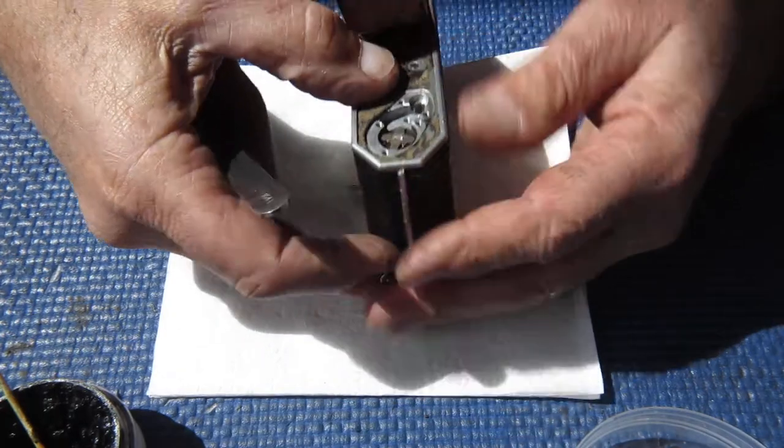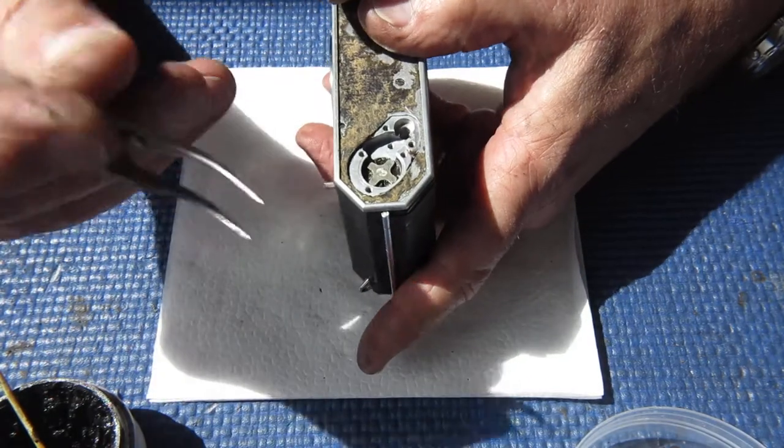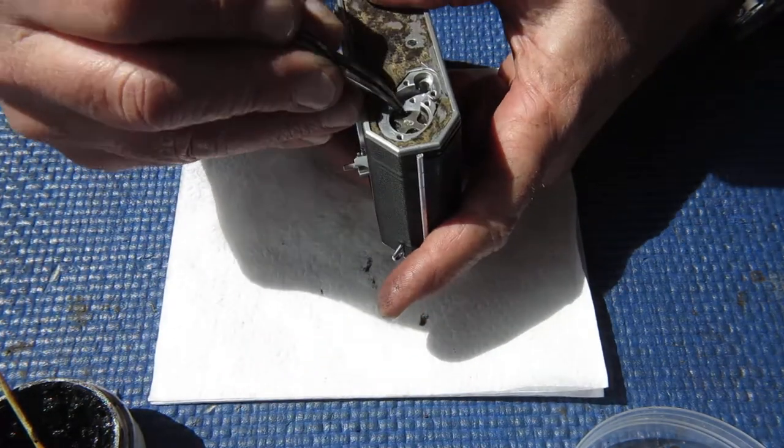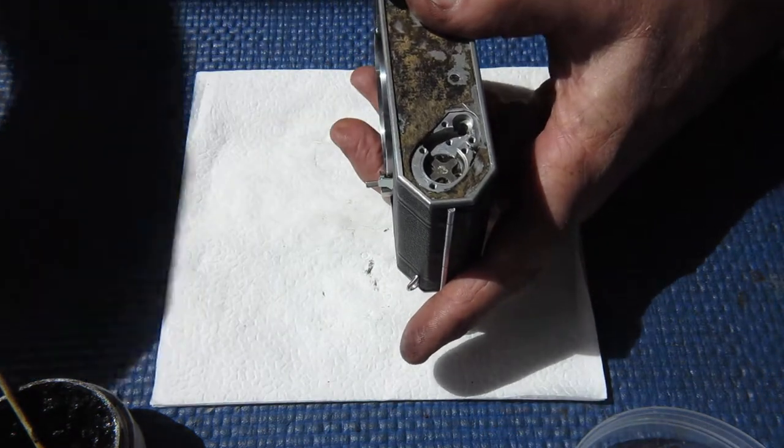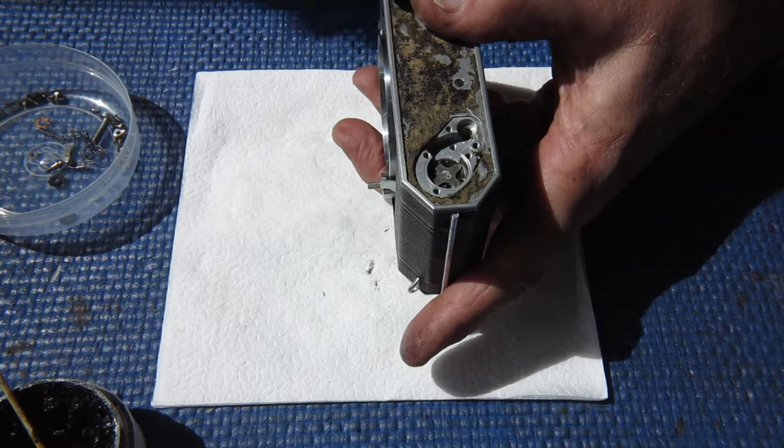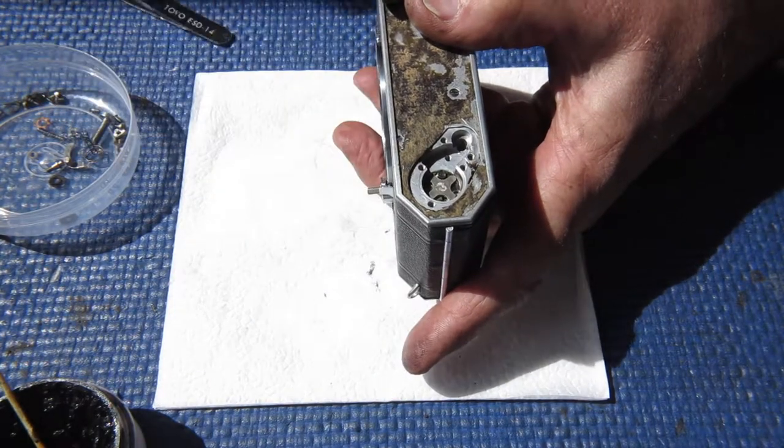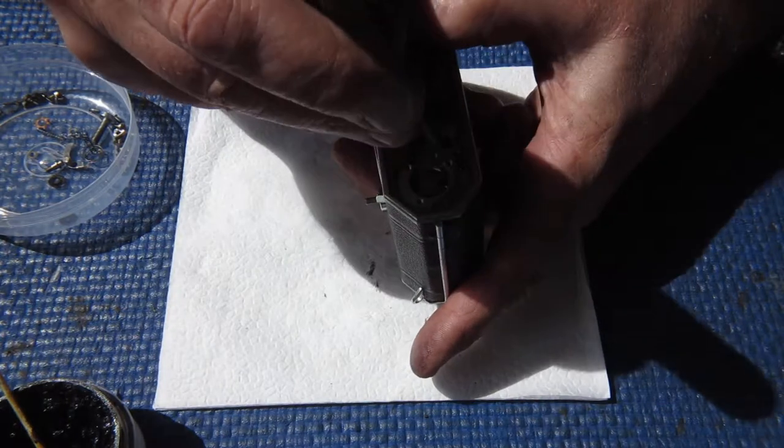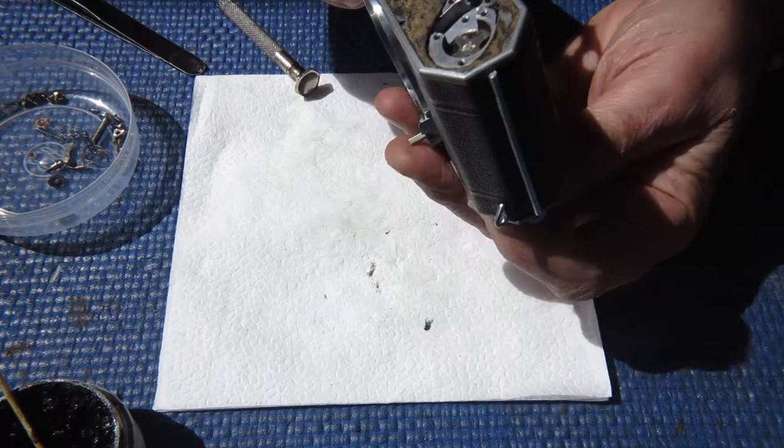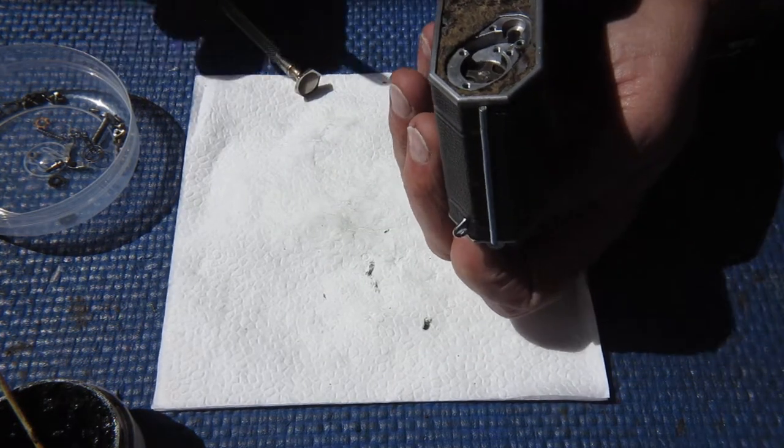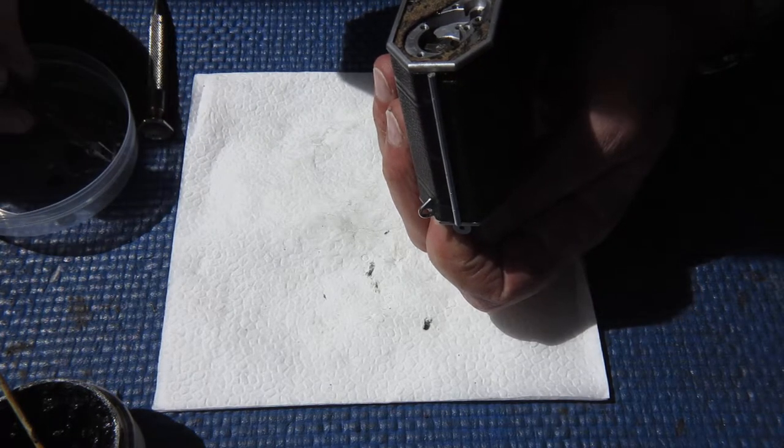On the Retina IIa it doesn't much matter where you position this because the adjustments tend to be done elsewhere. On other cameras it's important to get it all into one place so that the tension of the return spring for the advance shaft is correctly positioned. That's so that when you swing the film advance lever out, it moves smoothly and positively back into position once you've reached the end of the stroke and doesn't just hang.